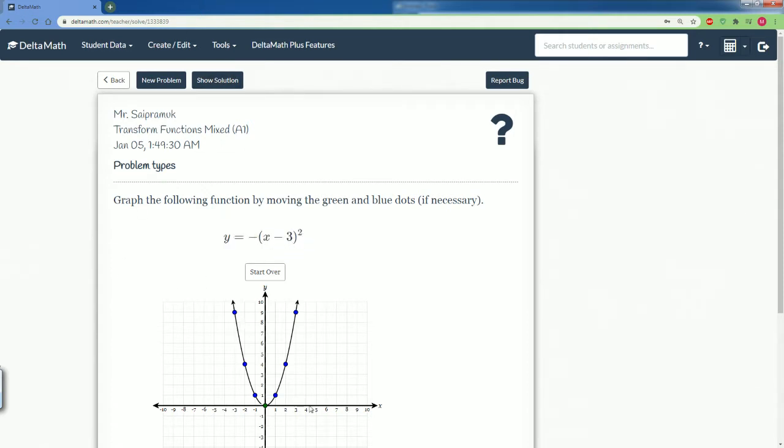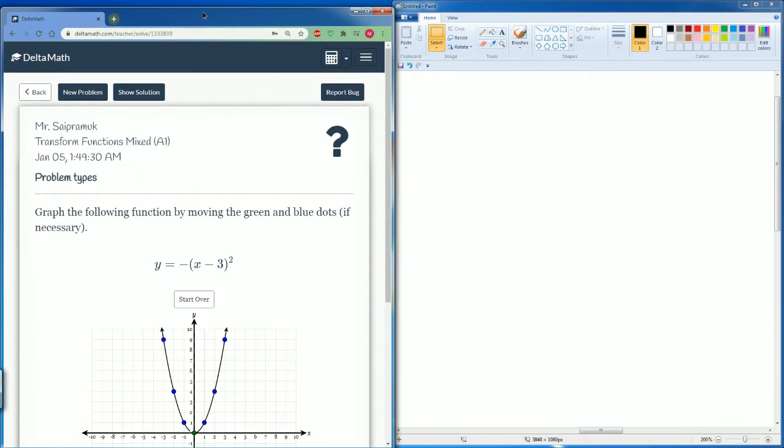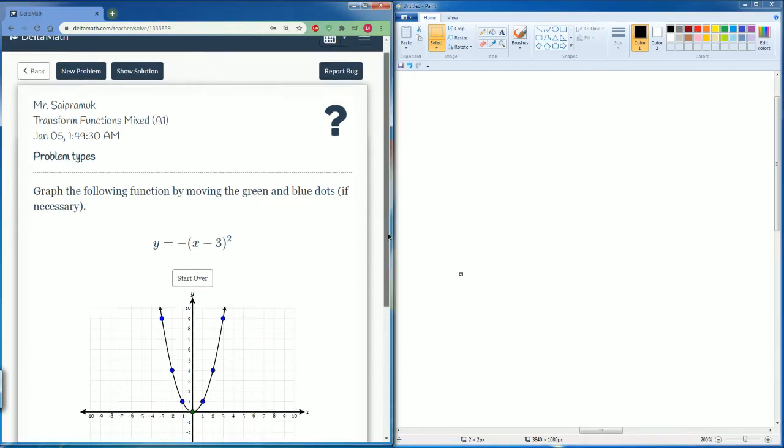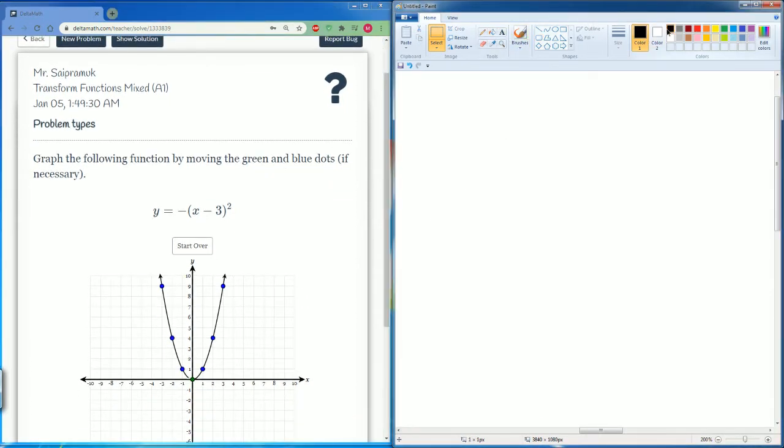The parent function is x squared. So we can use our properties of our transformations of our parabola.